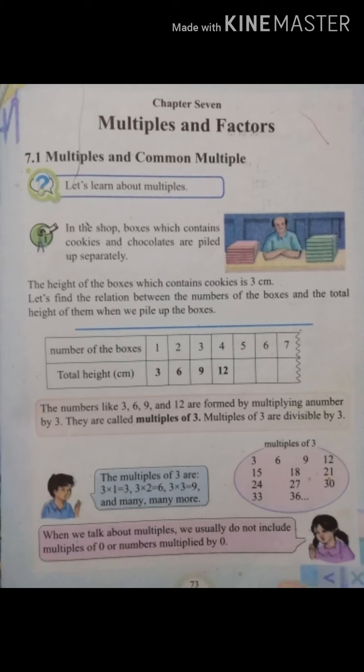The numbers like 3, 6, 9 and 12 are formed by multiplying a number by 3. They are called multiples of 3. Multiples of 3 are divisible by 3.